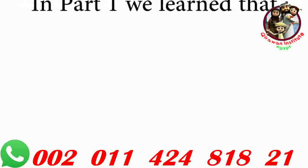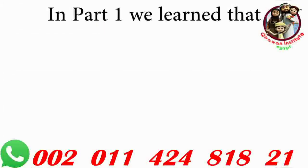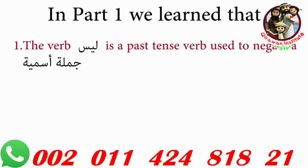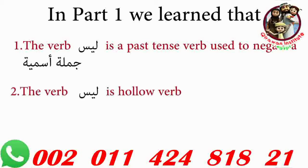In part one, we learned that the verb leysa is a past tense verb that's used to negate a jumla ismiya. A jumla ismiya is a sentence that begins with a name or a noun. We also learned that leysa is a hollow verb, and we learned how to conjugate leysa.